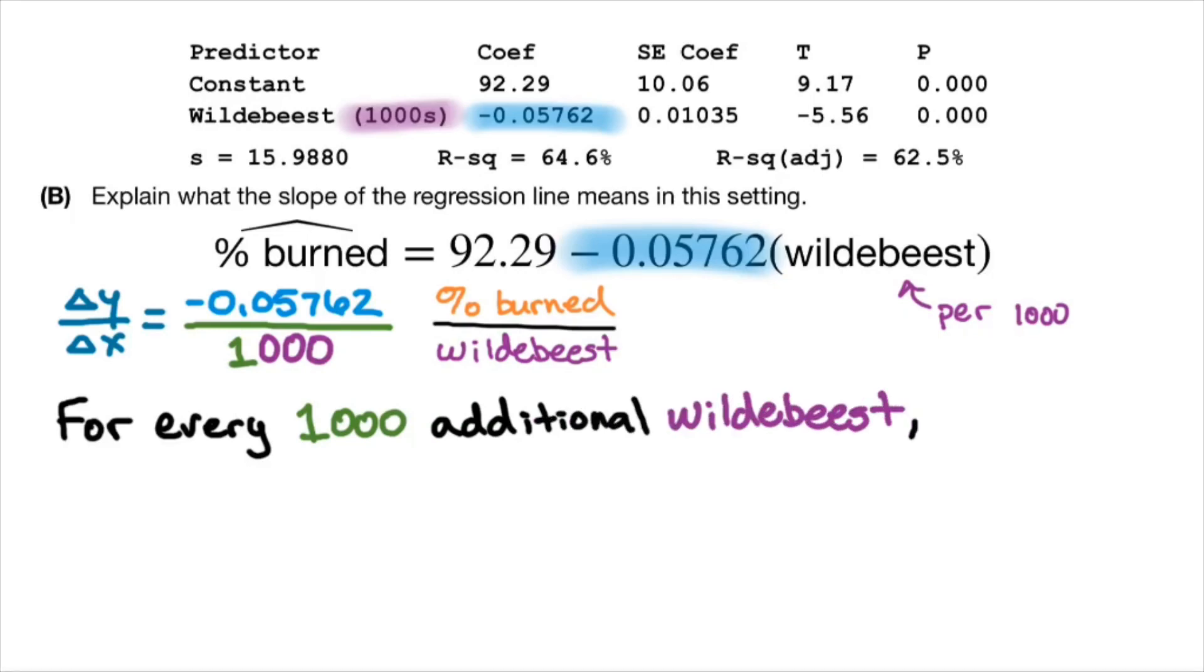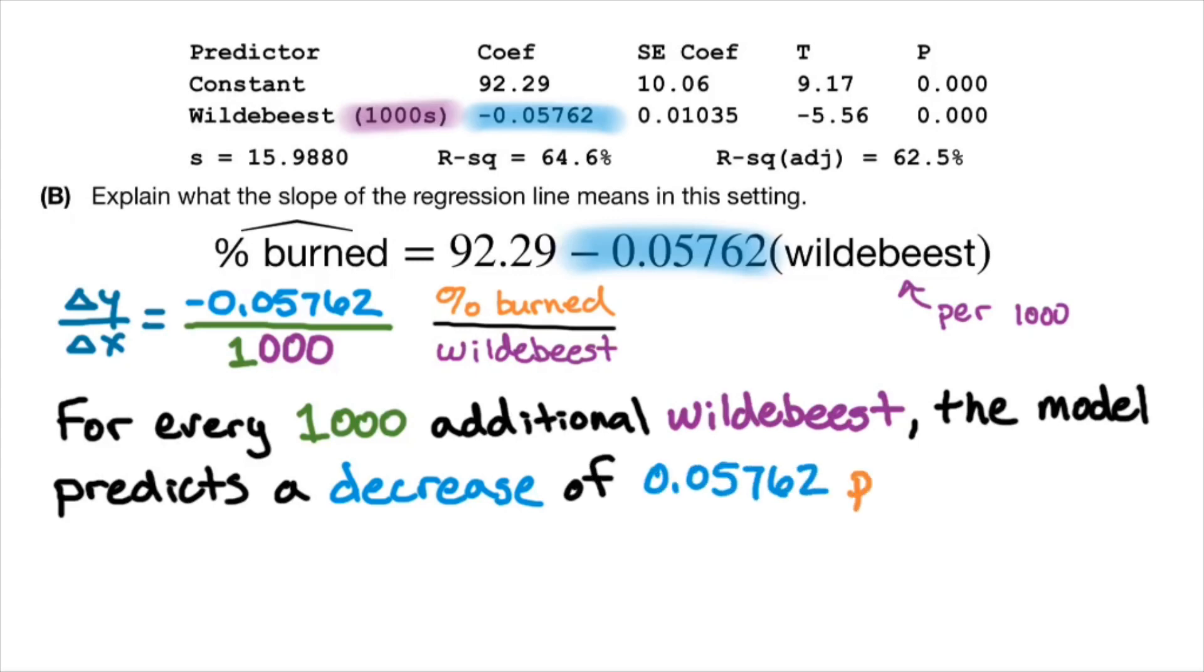So let's actually write what I just said down. So the first thing you should write is the denominator for every 1,000 additional Wildebeest. Next, let's basically just write the numerator. The model predicts a decrease. Now, why is it a decrease? It's because the slope is negative. A decrease of 0.05762% of grassy area burned on average. So there you have it.